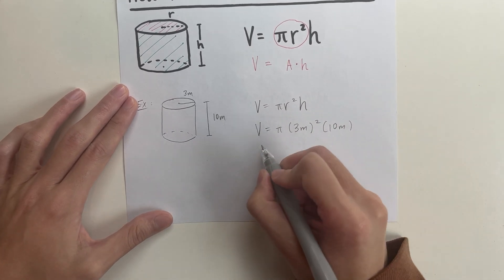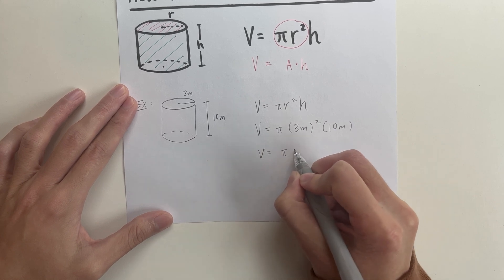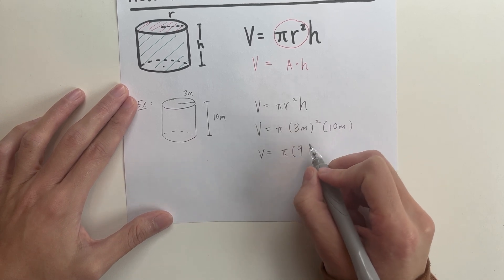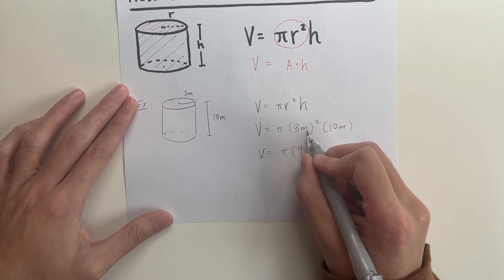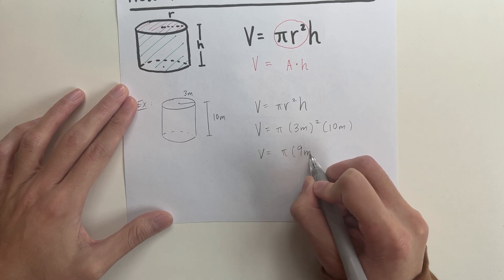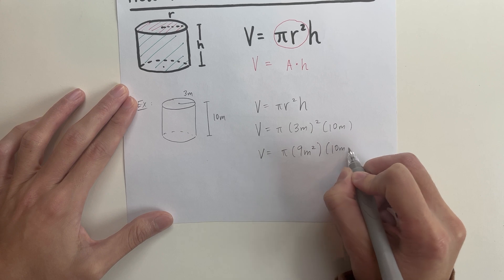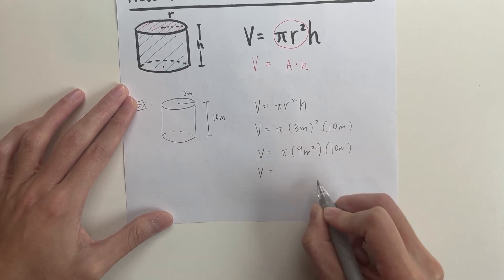Then the volume is pi times 3 meters squared, which is going to be 9, because 3 times 3 is 9. And we've got to make sure to have your units in the squared value as well. So 9 meters squared times 10 meters.